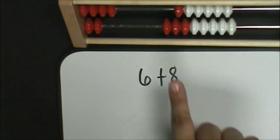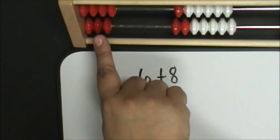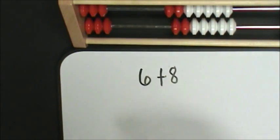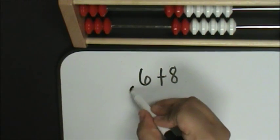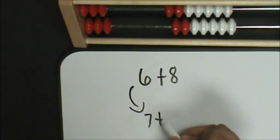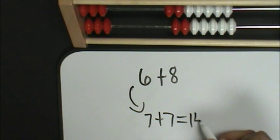Now I will move one bead back and one bead forward. Now I have doubles. That means I have seven plus seven, which is 14. That can be a lot easier for students to add than six plus eight.